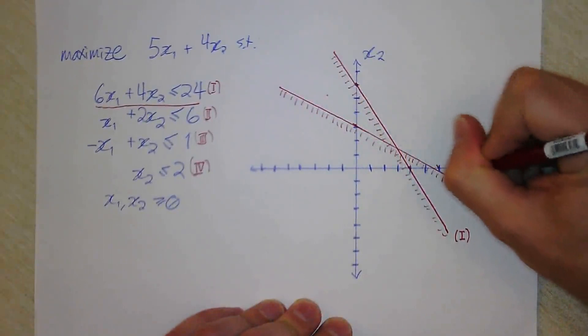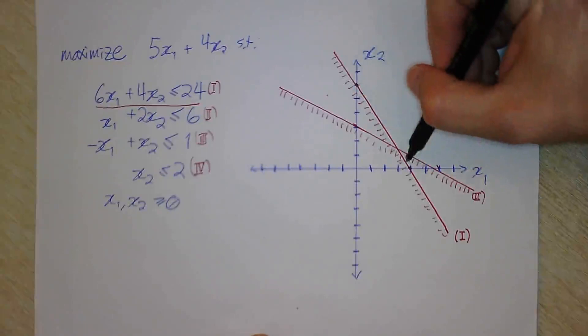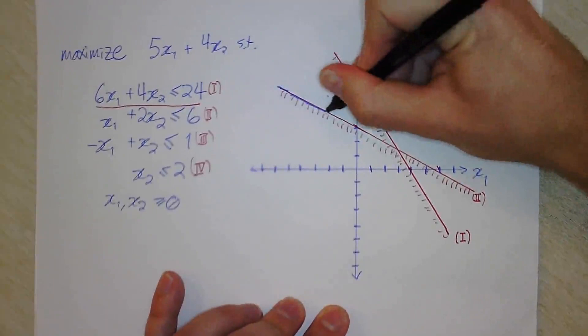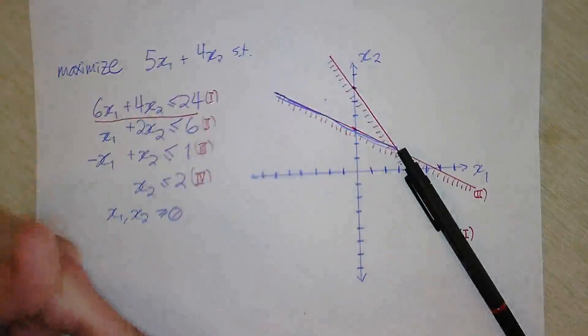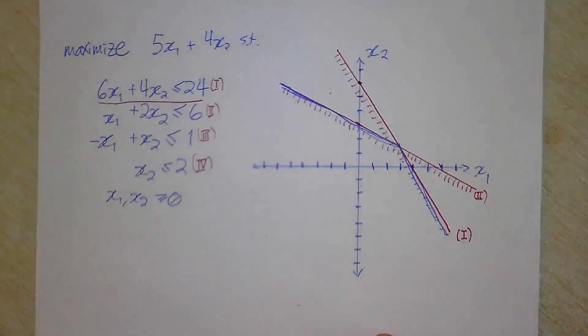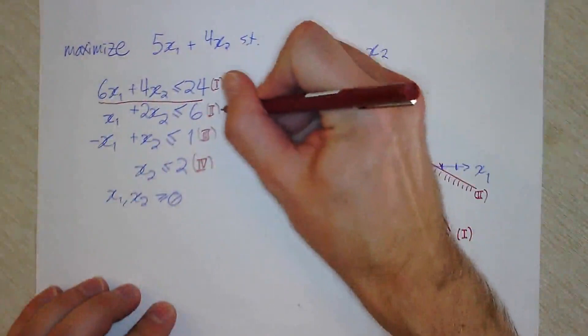So far, combining constraints I and II, the feasible region is everything below both of those lines — a kind of pointy region that extends off in those directions. We're going to make this region smaller by incorporating the remaining constraints. At this moment, the feasible region is like everything below my two fingers, and we'll keep narrowing it down.